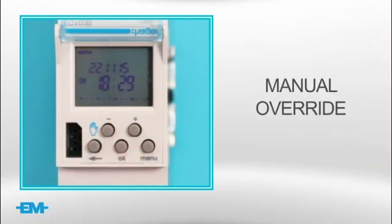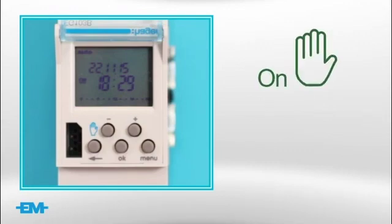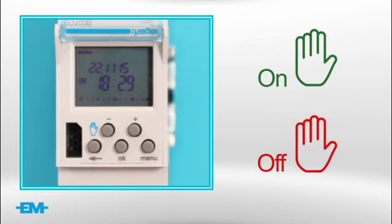Manual override. The manual function permanently overrides the programmed time function. Manual mode consists of two modes: On, where the output relay is permanently energised, and Off, where the output relay is permanently de-energised.